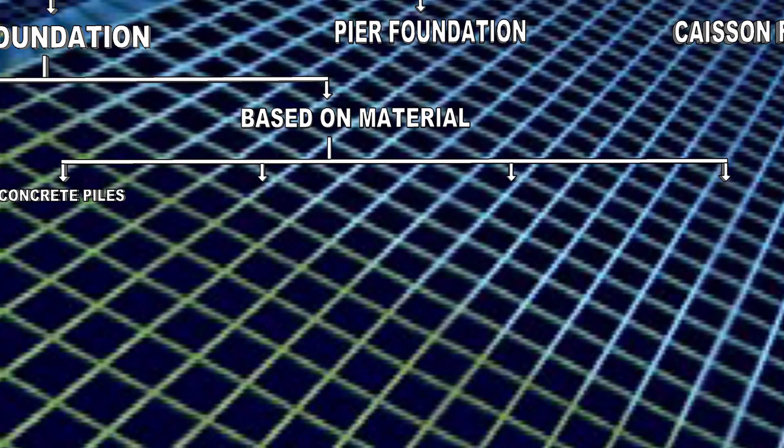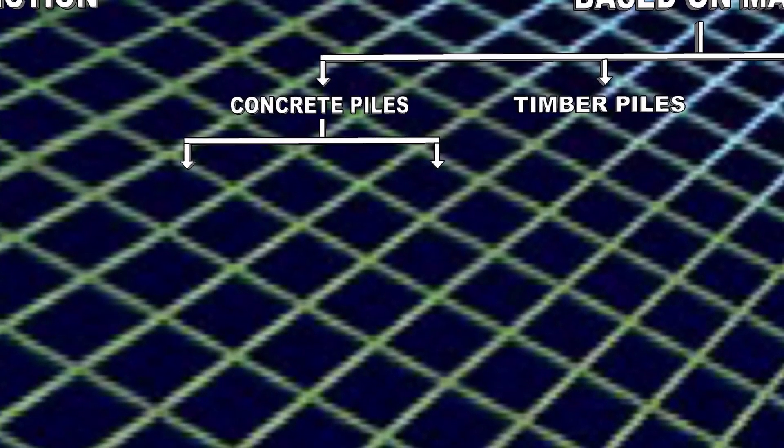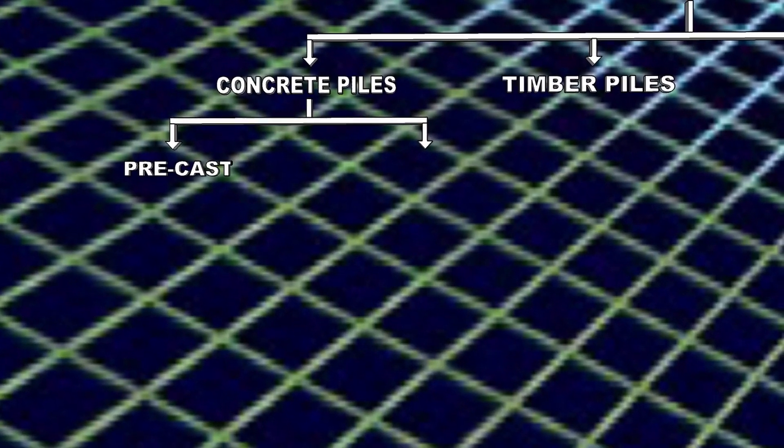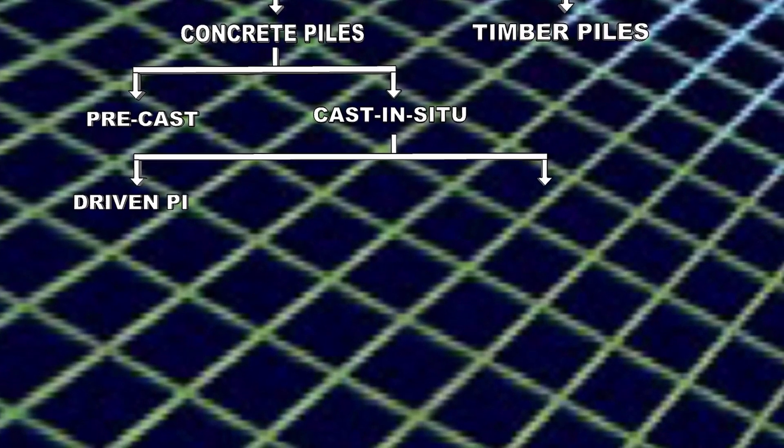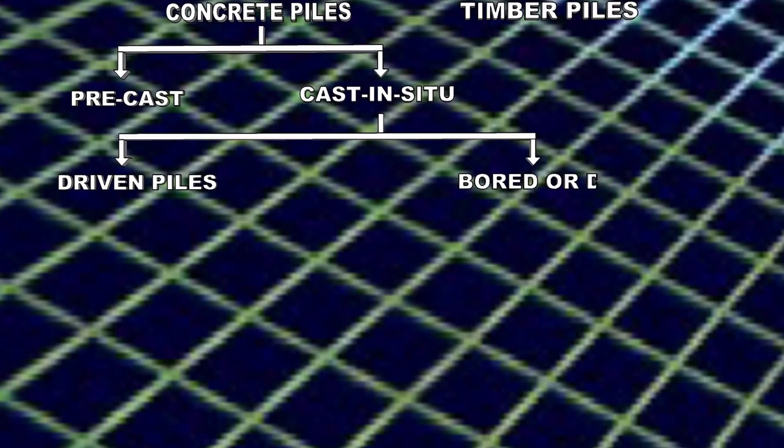Classification based on material has four different types: concrete pile, timber pile, steel pile, and composite pile. Concrete piles are further divided into two types: precast and cast in situ. The cast in situ piles are driven piles and bored or drilled piles.